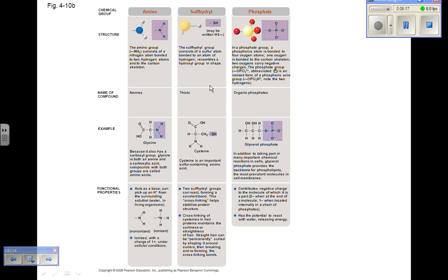Sulfhydryl groups are found in the R groups of some amino acids, especially cysteine. They're important in the cross-linking of cysteines on proteins, forming disulfide bridges.